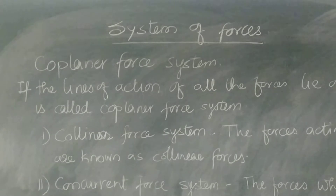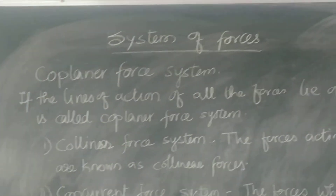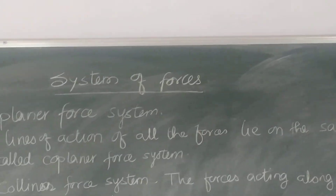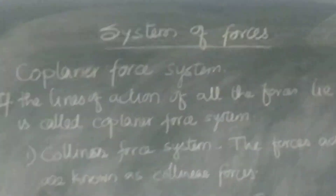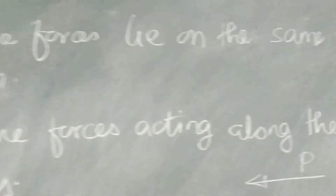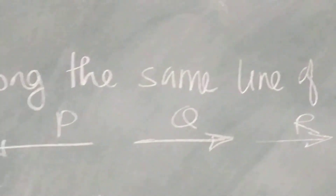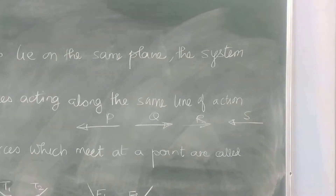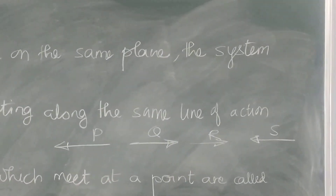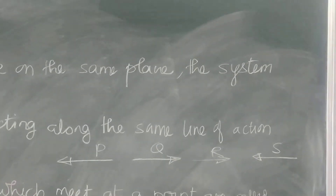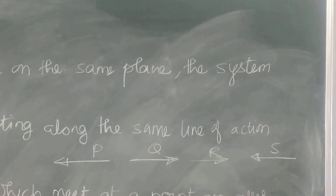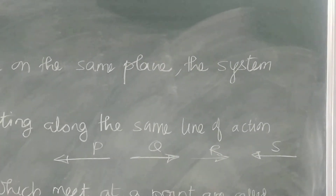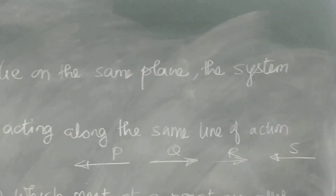The first one is collinear force system. The forces acting along the same line of action are known as collinear forces. Take this example — P, Q, R, and S are four forces that are collinear forces. The line of action of all the forces is the same, though the direction may differ.